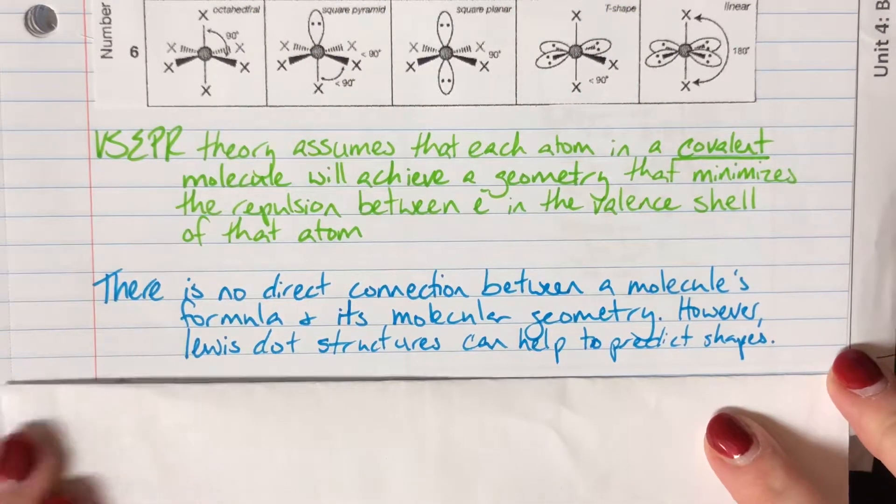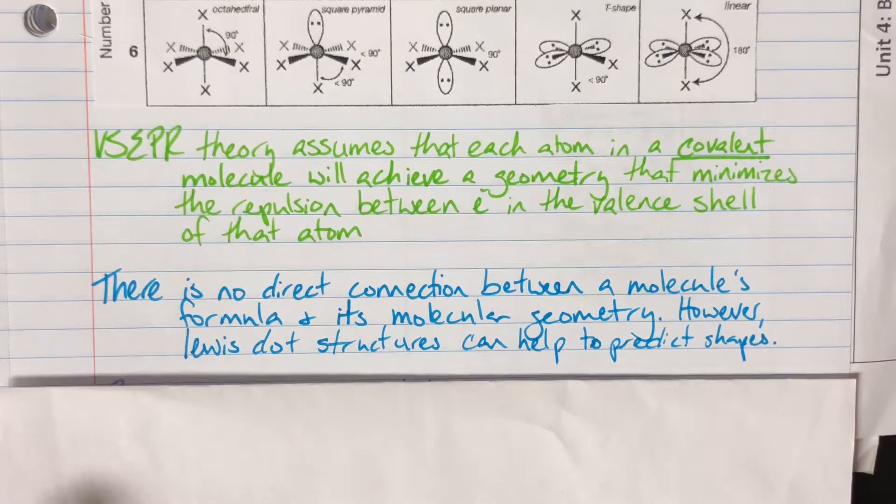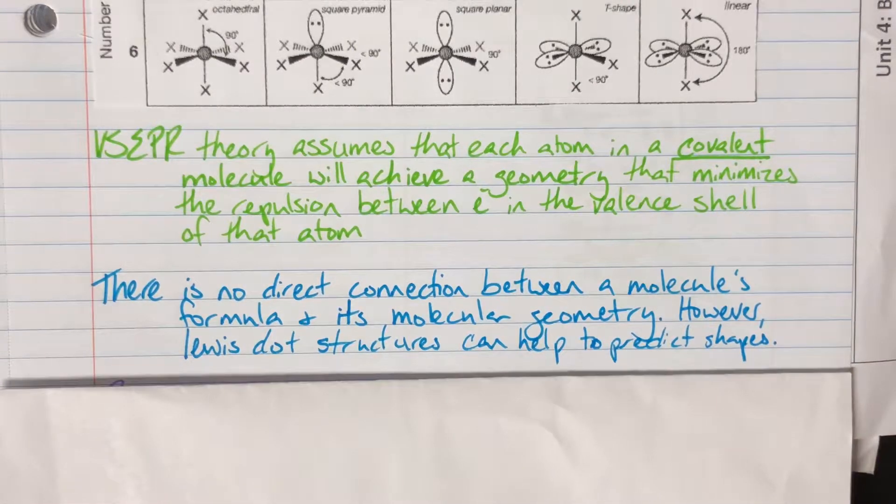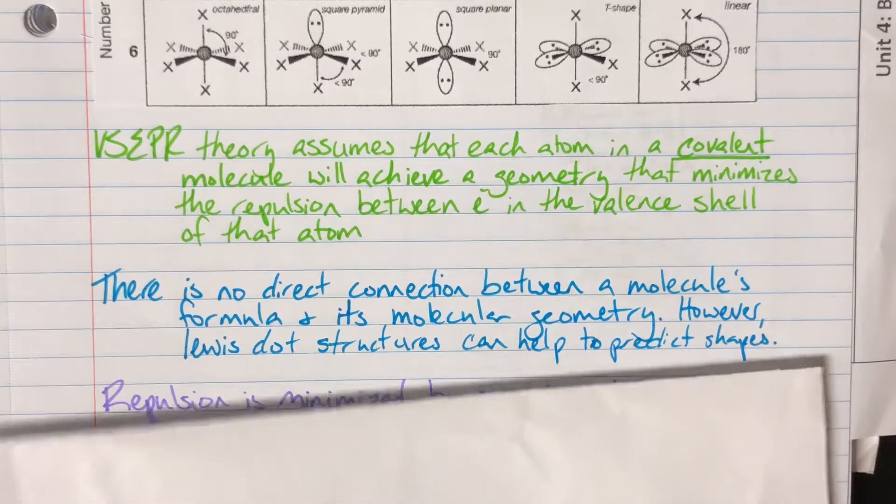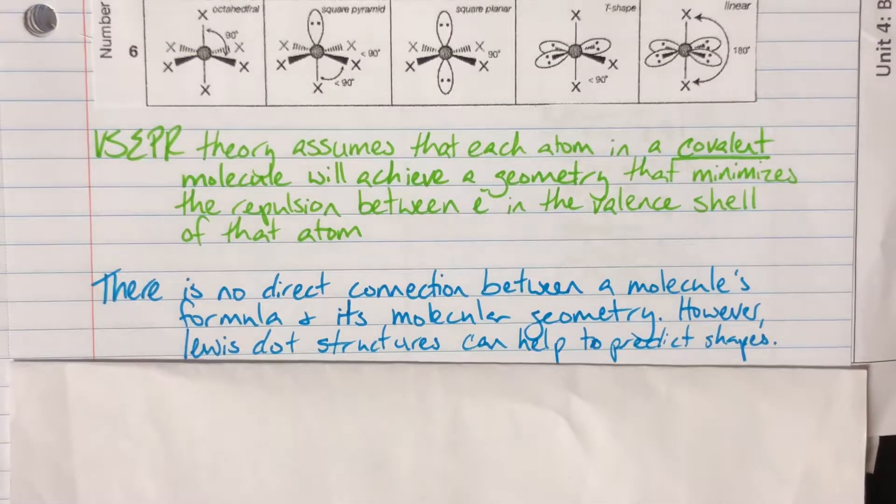Now there is no direct connection between a molecule's formula and its molecular geometry. However, you can predict its molecular geometry based off of its Lewis dot structure.